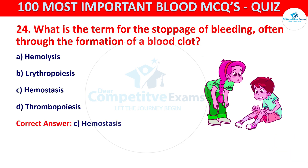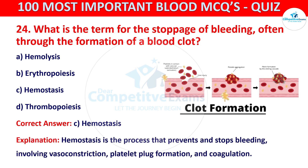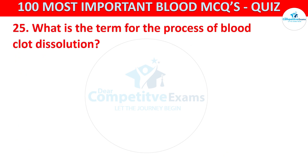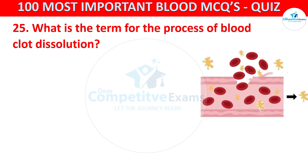The correct answer is Hemostasis. Hemostasis is the process that prevents and stops bleeding, involving vasoconstriction, platelet plug formation, and coagulation. Question 25: What is the term for the process of blood clot dissolution?